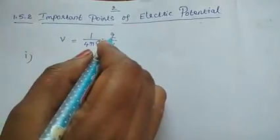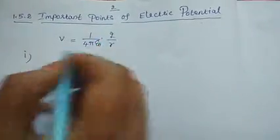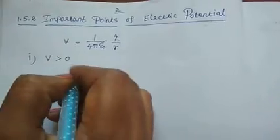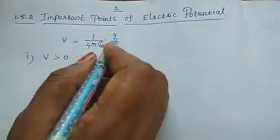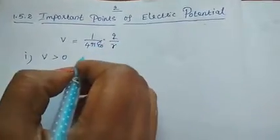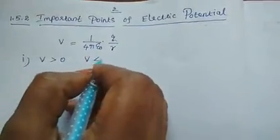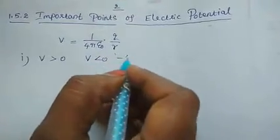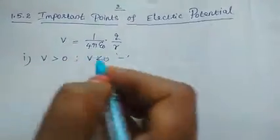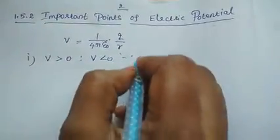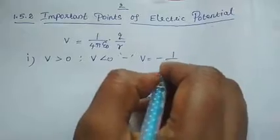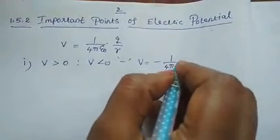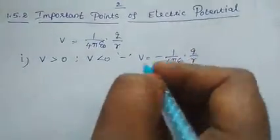First point: if the charge is positive, the potential V is always greater than zero. If the charge is negative, V is always less than zero — that means negative. We write that V is equal to minus 1 by 4 pi epsilon-zero into q divided by r.